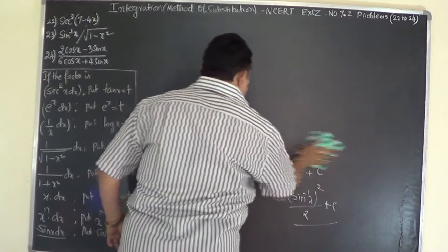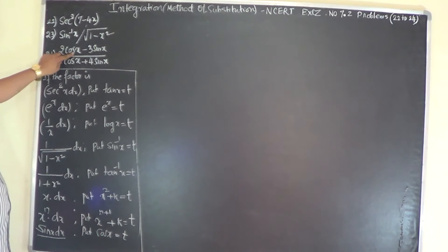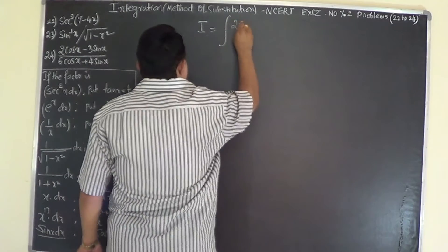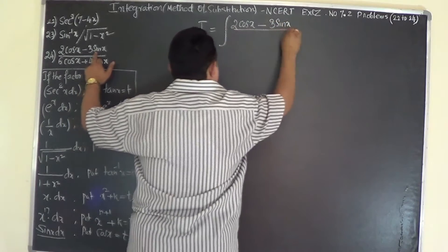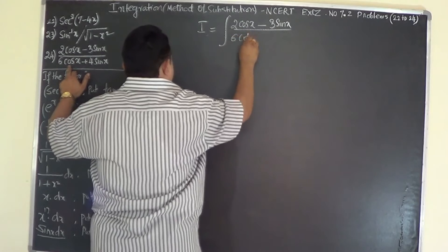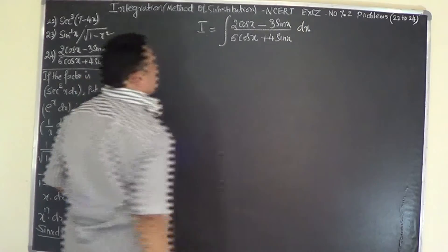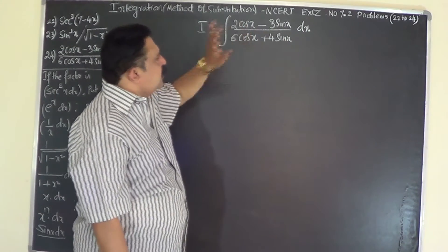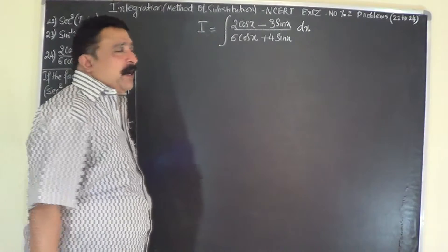Problem number 24: integrate (2cosx - 3sinx) / (6cosx + 4sinx). Write this as I = integral of (2cosx - 3sinx)/(6cosx + 4sinx) dx. Notice that if you differentiate cosx you get -sinx, and differentiating sinx gives cosx, so substituting the denominator as t will give the numerator upon differentiation.